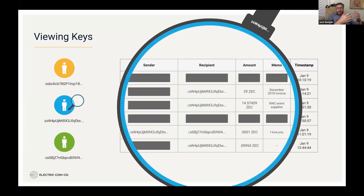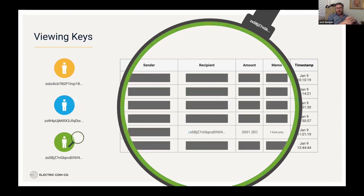Looking at the next viewing key representation for another address, we can see some more transactions. They received three transactions and sent one transaction. The received transactions relate to an invoice and some event supplies for Real World Crypto. There's also a transaction with nothing in the memo field. Second from the bottom is a transaction they sent — we can see it's their address, who the recipient is, the amount, and that the memo is a little love note saying 'I love you.' The person who received that transaction will get the message 'I love you,' but they don't necessarily get to see who sent it.